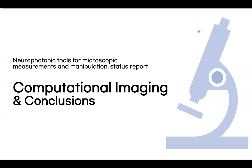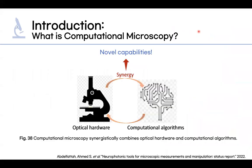Hello. For this presentation I'll be going over chapters 9 and 10 from the status report, which covers computational imaging and some conclusions. Computational microscopy is a class of methods that synergistically combines optical hardware and computational algorithms for enabling novel capabilities that the optics alone do not support.